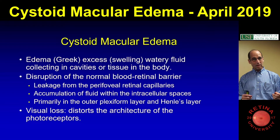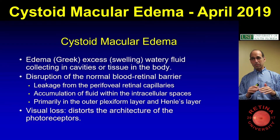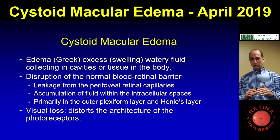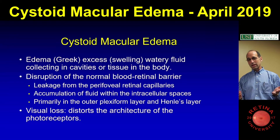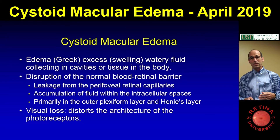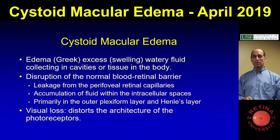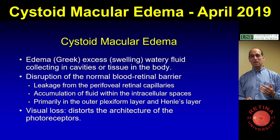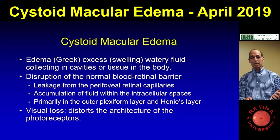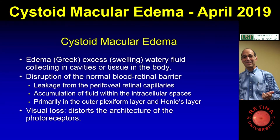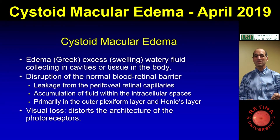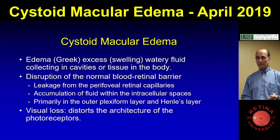For example, mactel — if you have mactel where there's no retinal thickening, people call those intraretinal voids; they don't call it edema. And then it's a disruption of the normal blood-retinal barrier. You get leakage from the parafoveal capillaries, accumulation of fluid, primarily in the outer plexiform layer and Henle's layer.